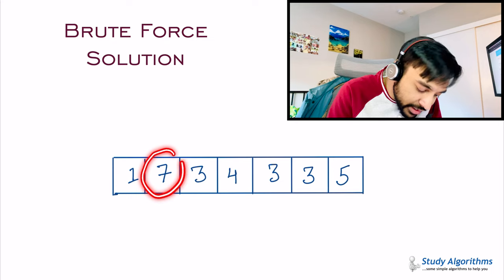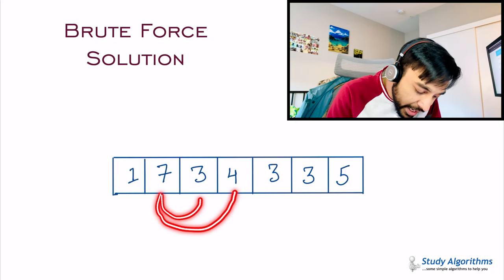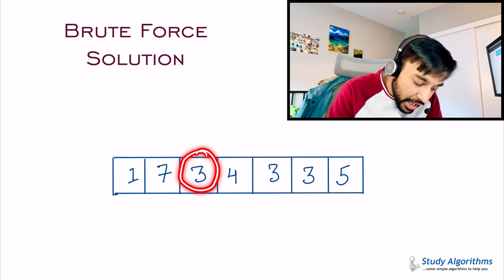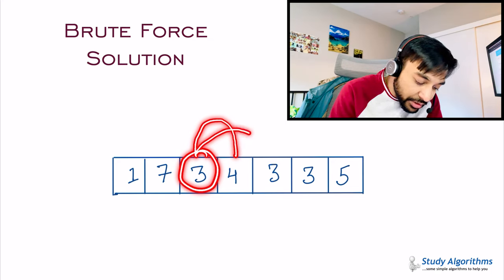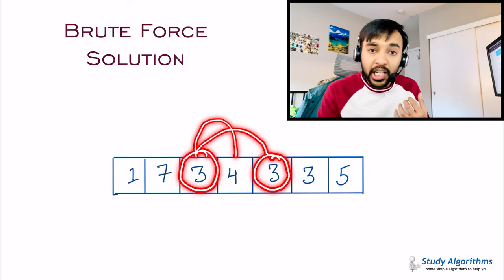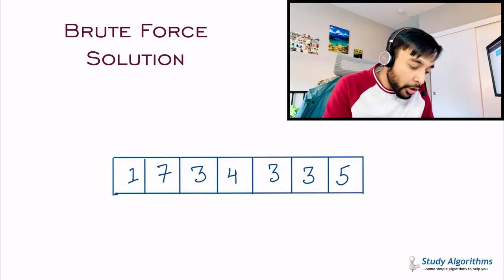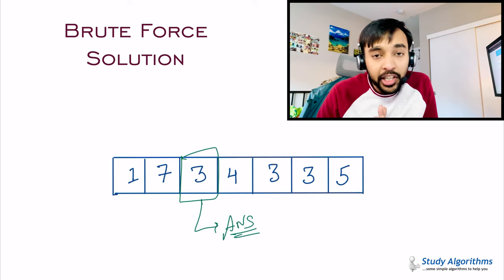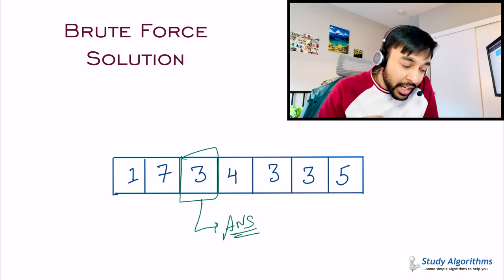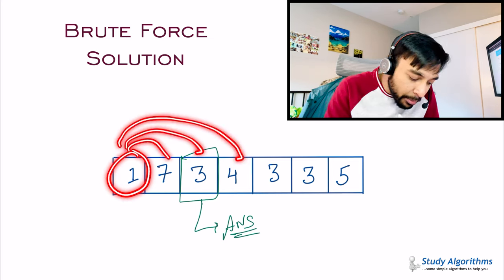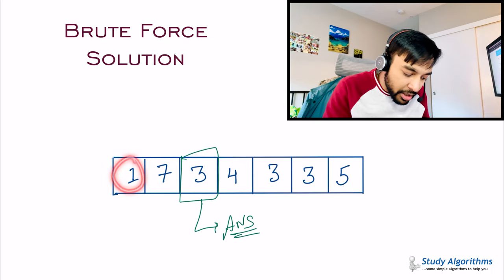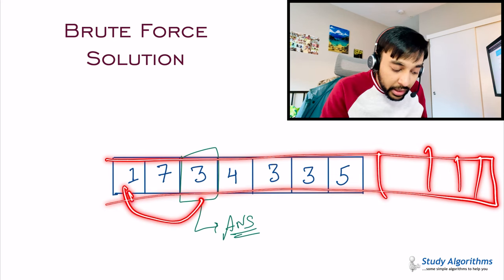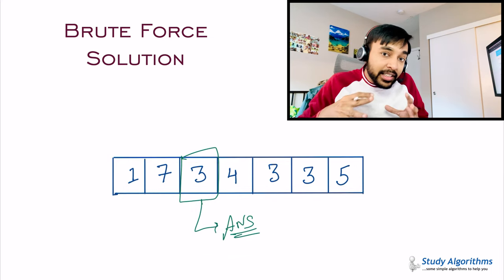Similarly, you can start with the second digit and check if you can find 7 anywhere else in the array. You cannot find it, and hence 7 is also unique. Next, you start with the number 3 and again try to search it in the array. You don't see 3 at first, but as soon as you move to the next position, you see a 3 again — meaning the number 3 is duplicated, so you return 3 as your answer. This is the correct solution and will give you the correct answer every time. But the problem is you are comparing every number to all the other numbers again and again. For a very large array this will take a lot of time, so this method is not desirable.